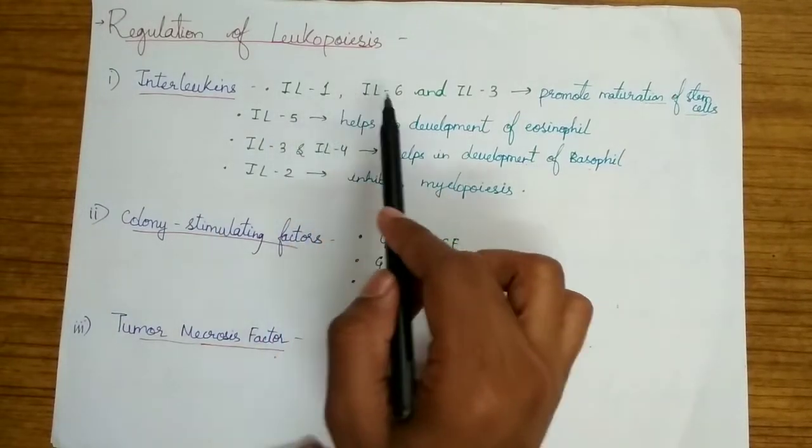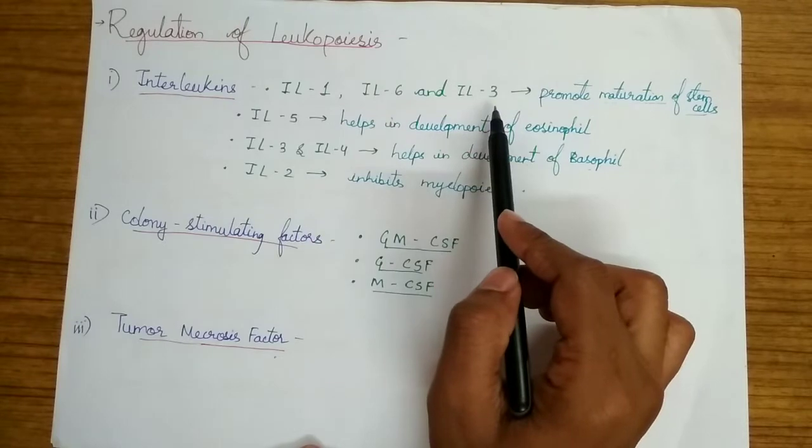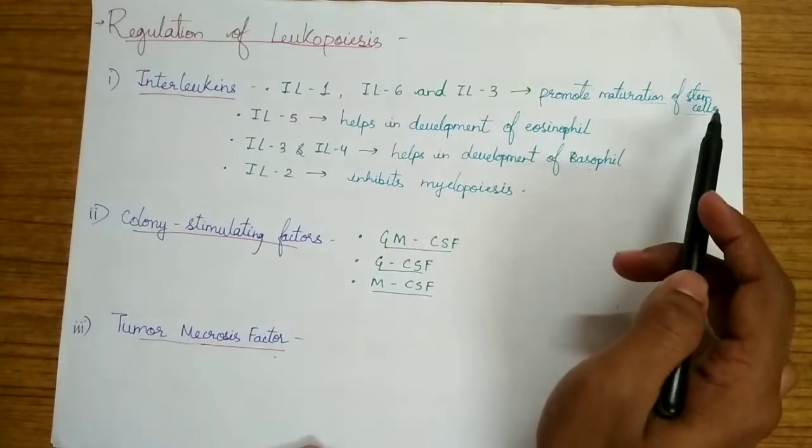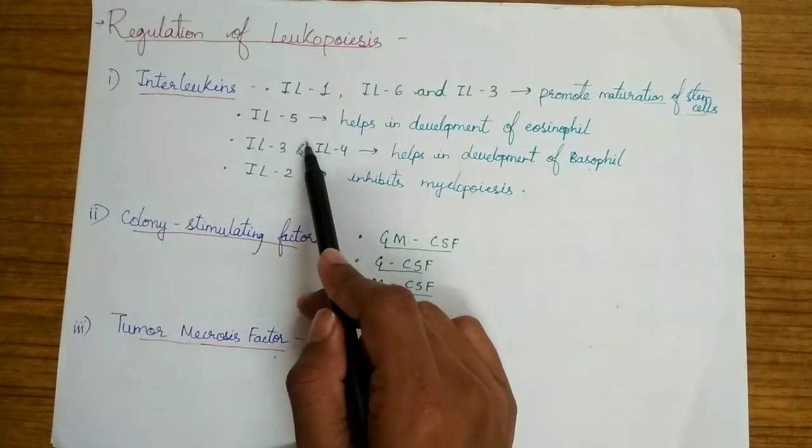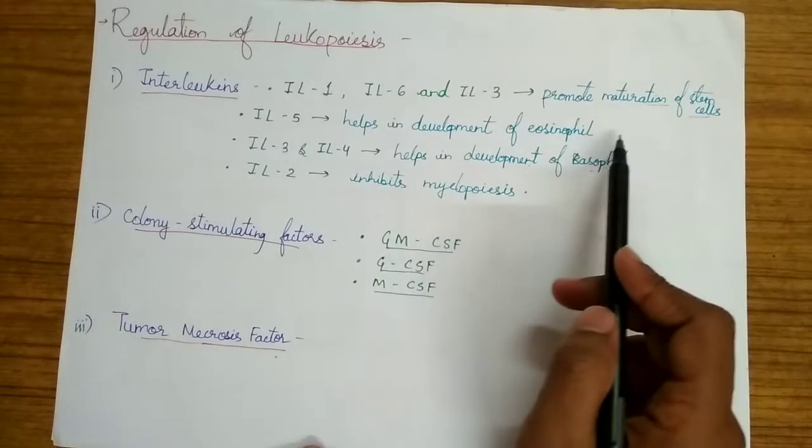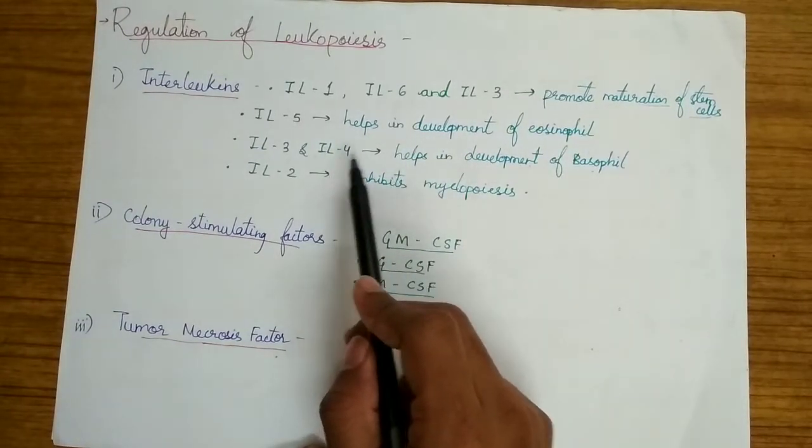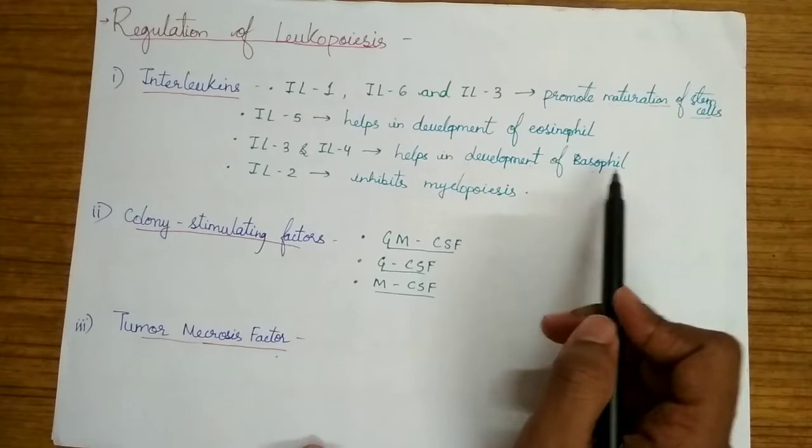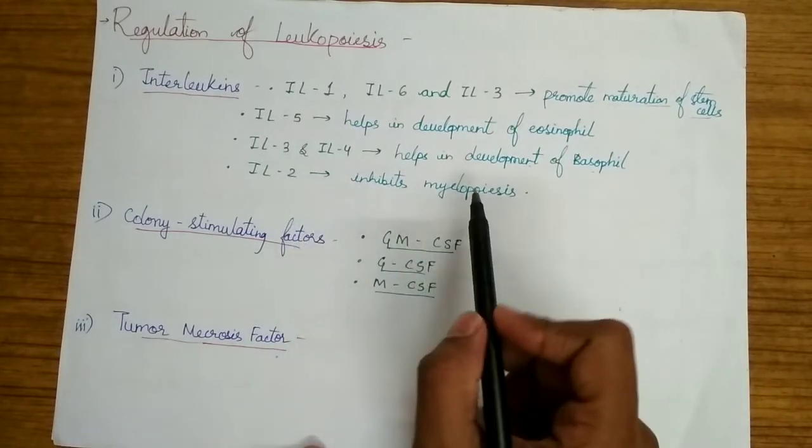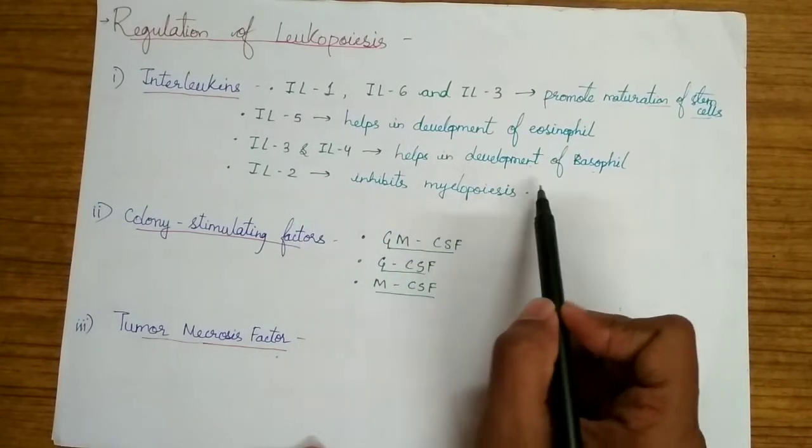Interleukins: Interleukin-1, interleukin-6 and interleukin-3 help to promote the maturation of stem cells. Interleukin-5 helps in development of the eosinophil cells. Interleukin-3 and interleukin-4 help in development of the basophil cells and interleukin-2 inhibits the myelopoiesis process.